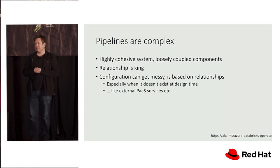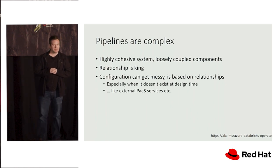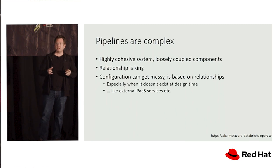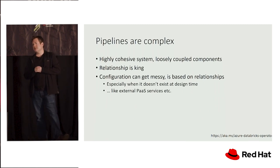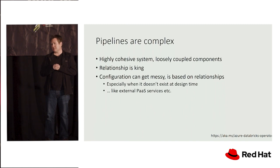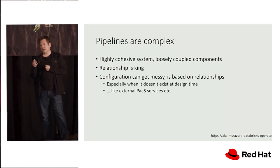If you break down pipelines into their semantic parts, the reality is they're a highly cohesive system but loosely coupled. The components don't really know about each other, but they know the interface between them — they know what to expect coming in. With pipelines, relationship is king. If we don't bring relationship up into a first-class consideration as part of our software delivery, we can have a really hard time as these pipelines get more and more complex.